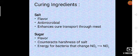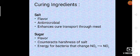Curing ingredients: Salt, sugar, water, nitrate or nitrite and alkaline phosphate. These are some of the curing ingredients which we use in curing. Salt is used for flavor development and it has antimicrobial property. It helps in enhancement of cure transport through meat.